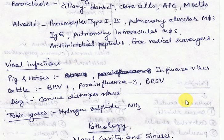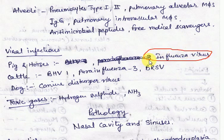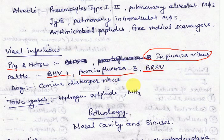In animals, the most common viruses that predispose to secondary bacterial pneumonia include influenza virus in pigs and horses, bovine herpesvirus 1, parainfluenza virus 3, and bovine respiratory syncytial virus in cattle, and canine distemper virus in dogs.